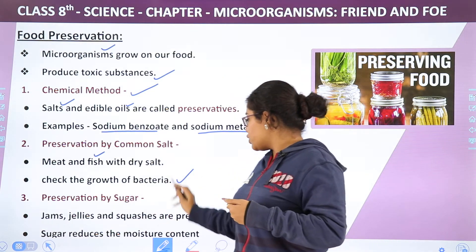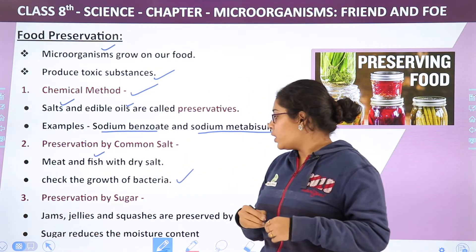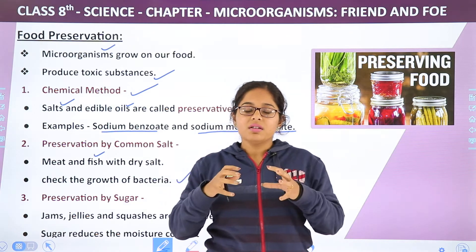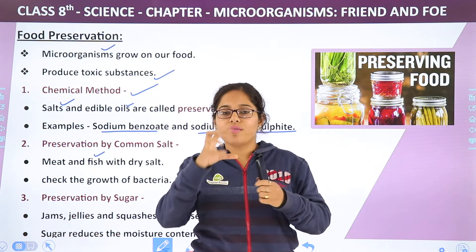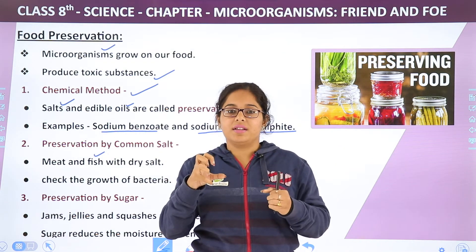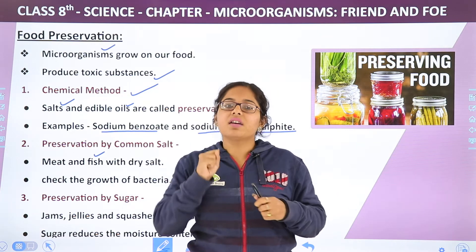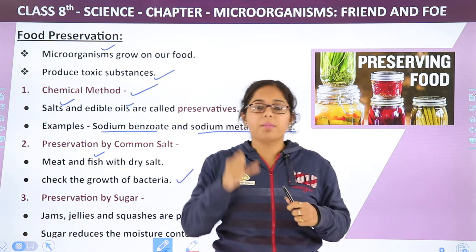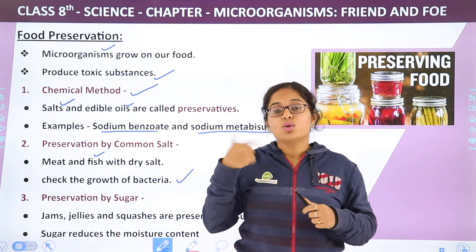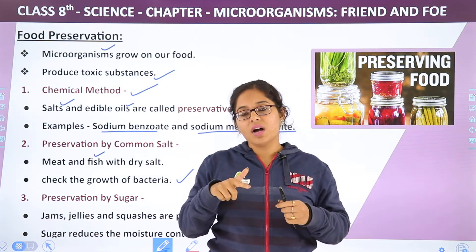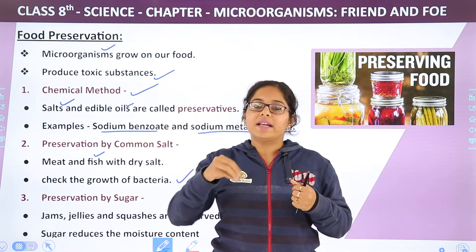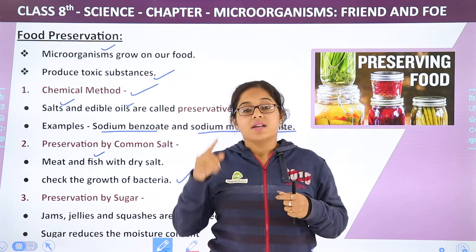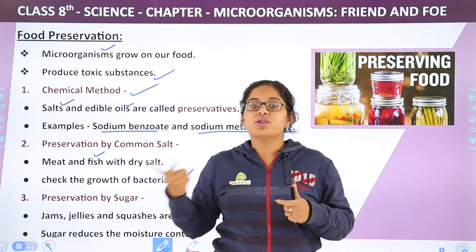Now, preservation by sugar. What does sugar do? Where there is sugar, it reduces the moisture content — it draws out water. So if there is no water, microbial attack chances will reduce. That is why jams and jellies use sugar as a preservative.